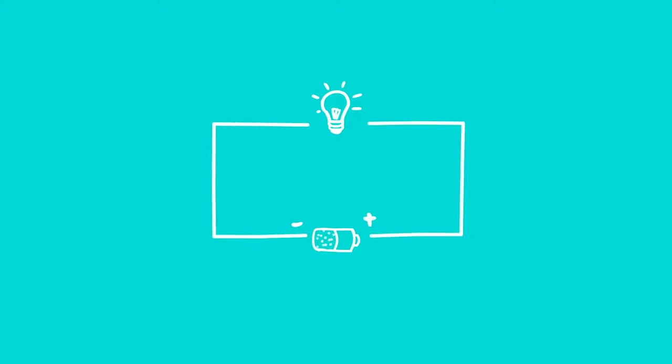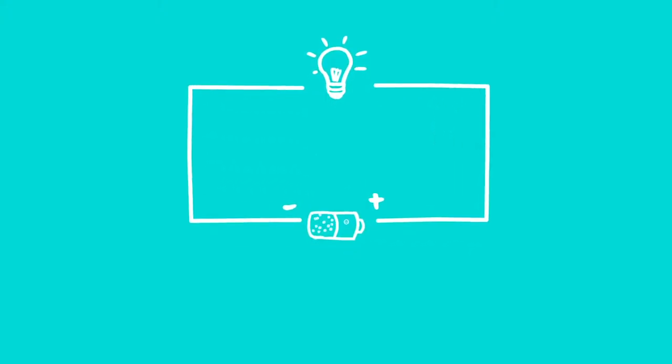At the plus terminal of the battery there are only a few electrons, and therefore the plus terminal is charged positive. Electrons flow from the minus terminal to the plus terminal. They flow from the location with many electrons to the location with few electrons.